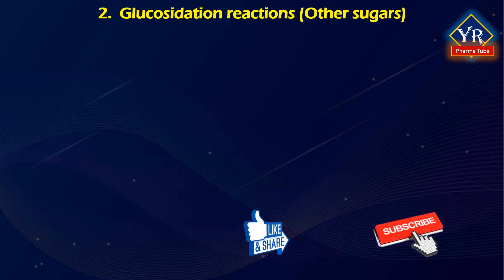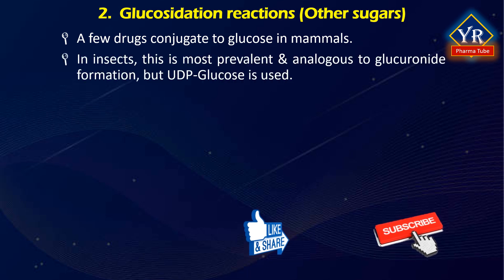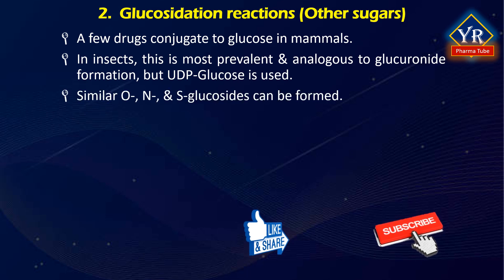Glucosidation reactions, that is conjugation with other sugars: a few drugs have been observed to be conjugated to glucose in mammals. This is usually a minor pathway in some cases where glucuronidation is possible. In most species, conjugation with glucuronic acid is the most important sugar conjugation, but in insects conjugation with glucose is more prevalent. The reaction is exactly analogous to glucuronidation but UDP glucose is used instead of UDP glucuronic acid, and glucosides are formed. Similar O-glucosides, N-glucosides and S-glucosides can be produced in these reactions.